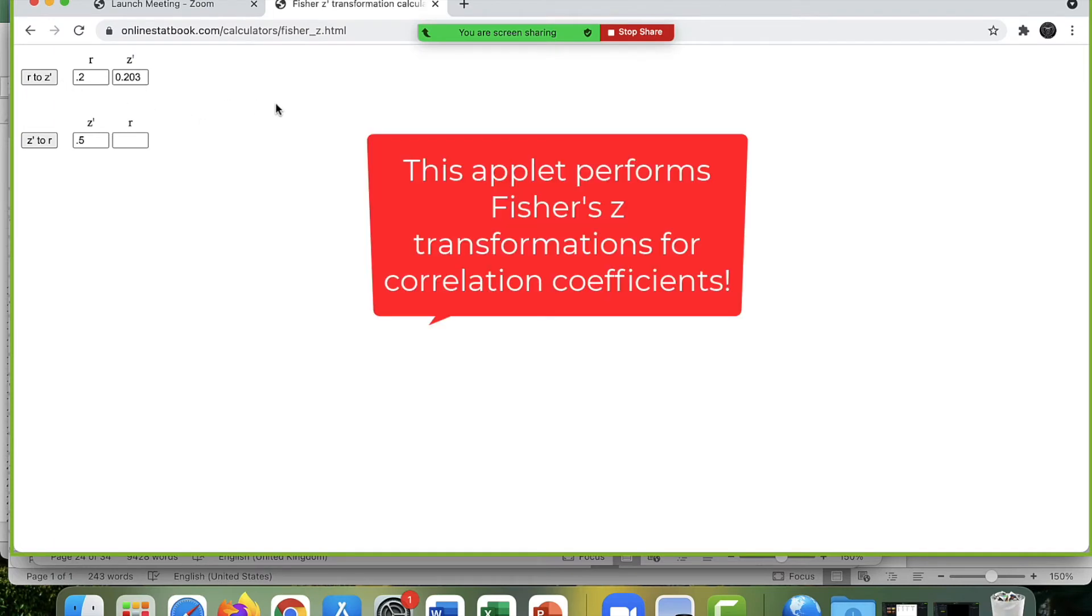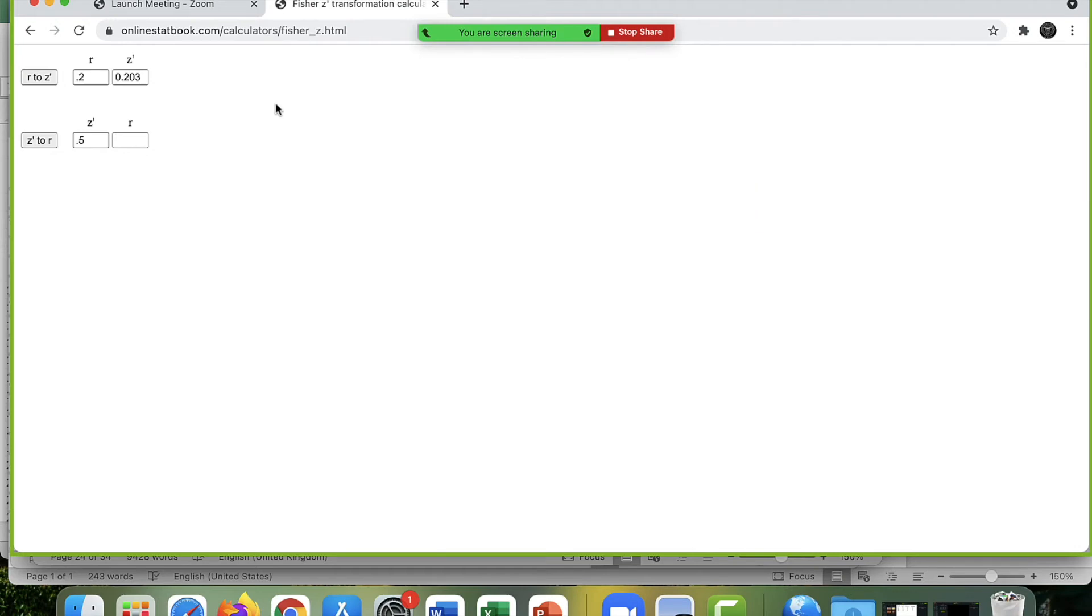This is an online applet where you can just plug in your correlation coefficient and it'll automatically tell you what the z prime number is. Our correlation coefficient was 0.40.